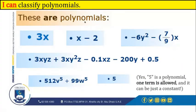These are polynomials. 3x is a constant variable — it is a polynomial. x minus 2 is also a polynomial. Negative 6y to the power of 2 minus 7 over 9 times x is also a polynomial. The y is not powered to a negative number; it is 2 — it's positive.